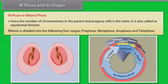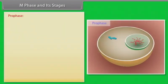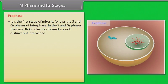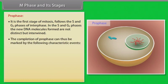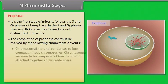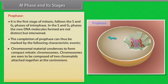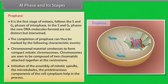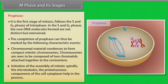The first stage of mitosis is prophase. It follows the S and G2 phases of interphase. In the S and G2 phases, the new DNA molecules formed are not distinct but intertwined. The completion of prophase can be marked by the following characteristic events: chromosomal material condenses to form compact mitotic chromosomes; chromosomes are seen to be composed of two chromatids attached together at the centromere; initiation of the assembly of mitotic spindle occurs.